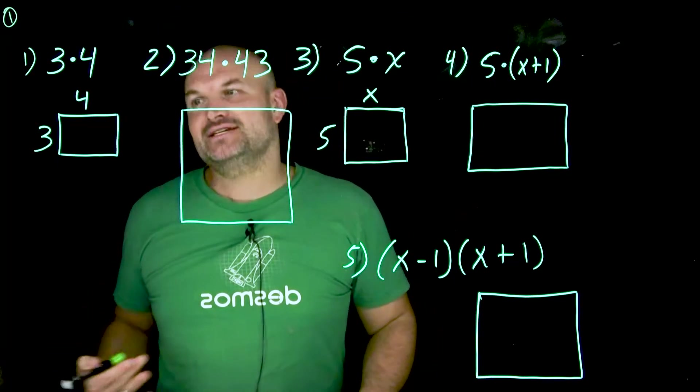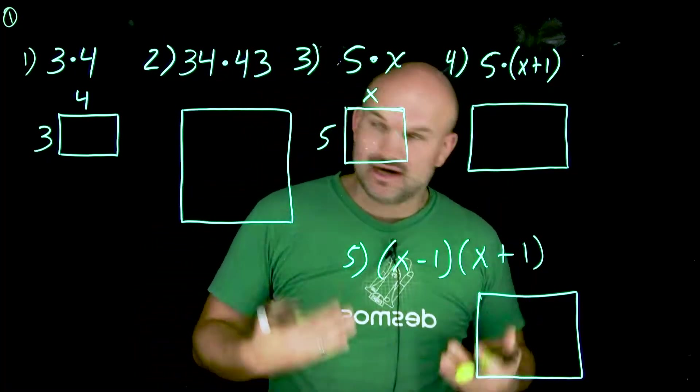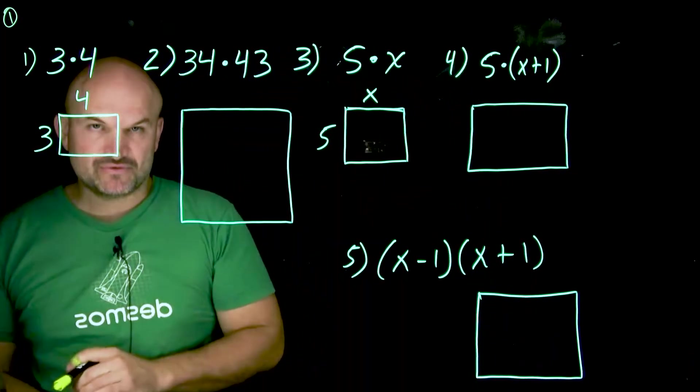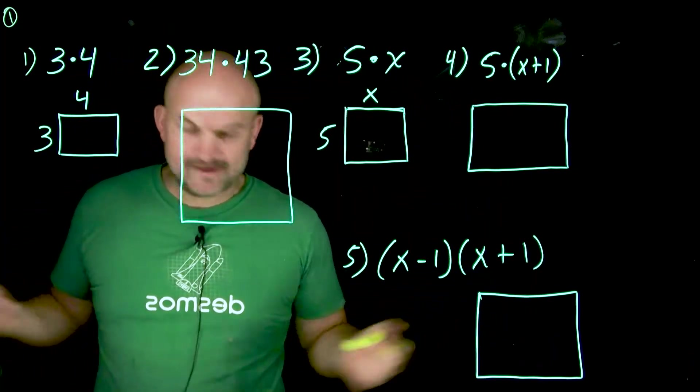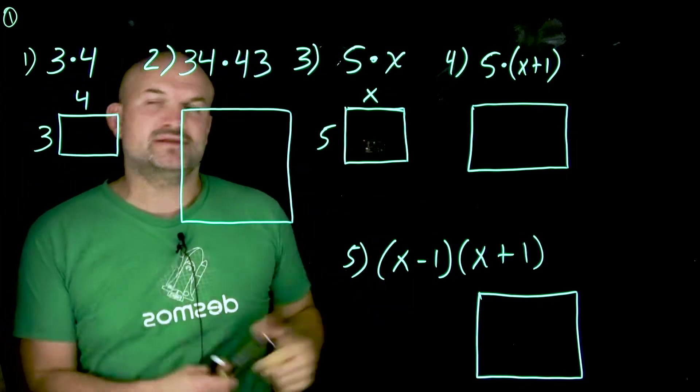And one of the important things that I want you to realize is when you have a product that is providing you with the area of a rectangle. So when I say three times four, hopefully you know the answer is 12. But if you look at this, if you take those three and four and you use them as a length and a width of a rectangle,